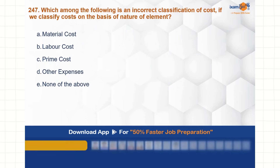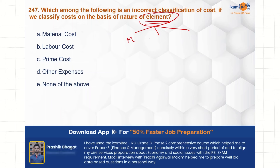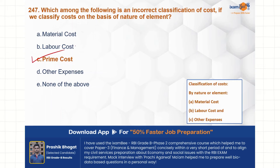Which among the following is an incorrect classification of cost? If we classify cost on the basis of nature of elements, element ke basis pe jab hum classify karte hai toh aata hai material, labor, and other expenses. So options A, B, and D are correct here. Prime cost is not a classification on the basis of element, so C is the correct choice.